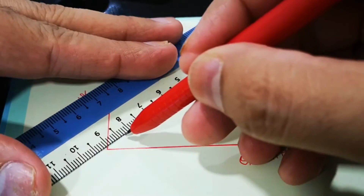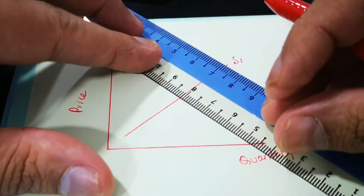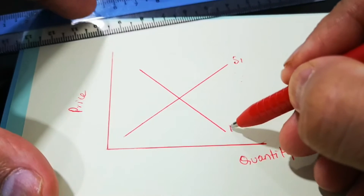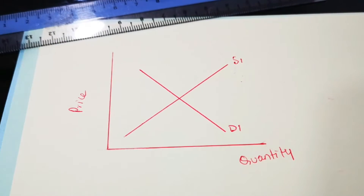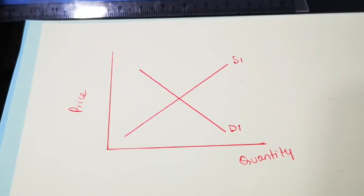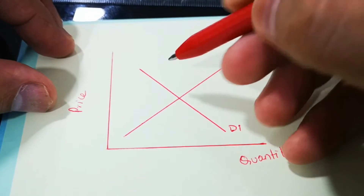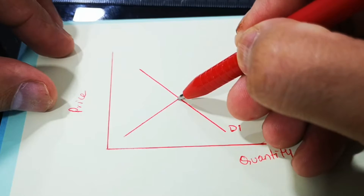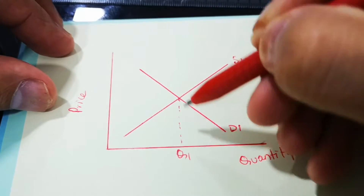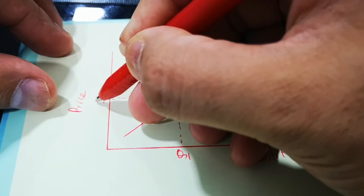The upward sloping curve is the supply curve and we label this as S1, and the downward sloping curve is D1. Now we've got our demand and supply diagram. It is not complete yet because we'll have to draw the dotted lines showing the various equilibrium points. Always draw the dotted lines starting from the equilibrium — not the other way round. This would be Q1 and this is P1.